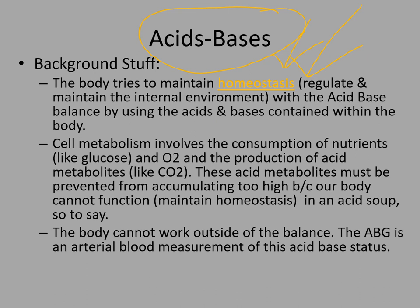The acid-base balance — when you have cellular metabolism you're consuming nutrients like glucose and oxygen, and you produce acid like CO2. Remember, CO2 is a carbonic acid. That metabolic byproduct of CO2 should be prevented from accumulating in the body because if CO2 accumulates, the body becomes more acidic — we're adding an acid to the solution.